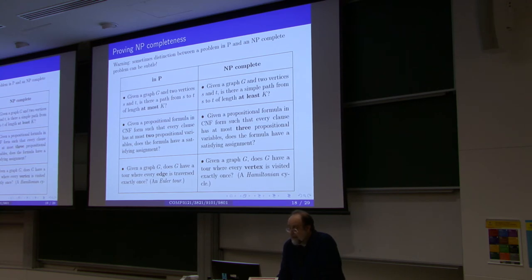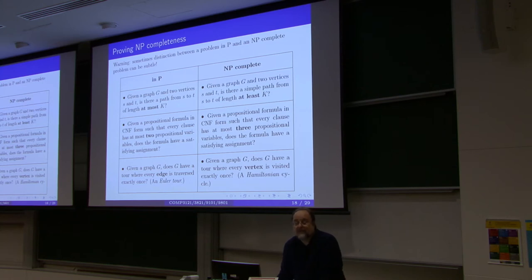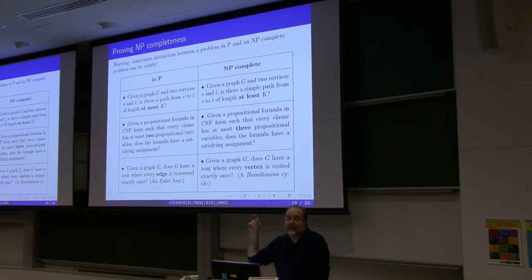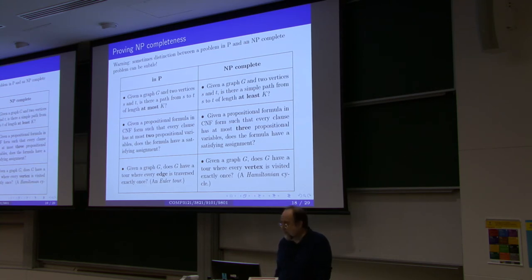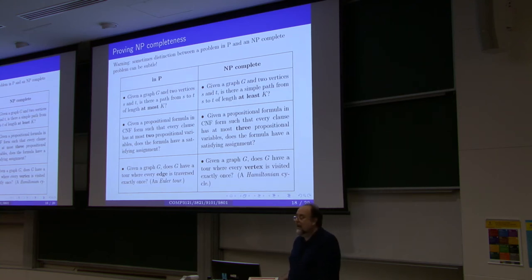Another example: if you are given a propositional formula in conjunctive normal form, and each clause has at most three literals, this is an intractable NP-complete problem. However, if you limit each clause to at most two literals, this problem is solvable in polynomial time — try to do it as a homework.